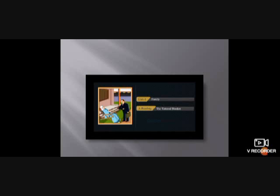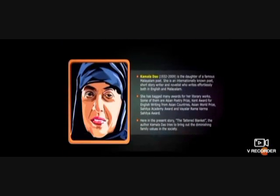Coming to Part A of Unit 1, it is about 'The Tattered Blanket.' It is a story which shows the diminishing value of family relationships. The story is written by Kamala Das, daughter of a famous Malayalam poet. She is an internationally known poet, short story writer, and novelist who writes effortlessly both in English and Malayalam. In this story, Kamala Das tries to bring out the diminishing family values in society.